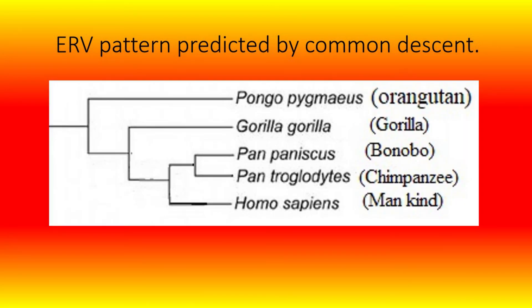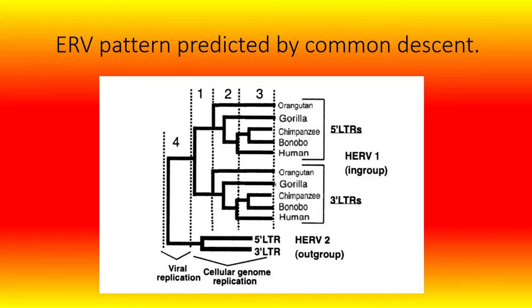If ERVs are a result of common descent, we should expect them to produce a consistent pattern consistent with common descent. The expected pattern has a common branch splitting, with one branch going towards the orangutan and the other towards the rest. That branch would split off into gorillas and another branch splitting off into the remaining three, with that branch then splitting into mankind and two chimpanzee species, which would then split into bonobos and chimpanzees. This chart shows a perfect match to the evolutionary model, illustrating what we should expect from common descent.